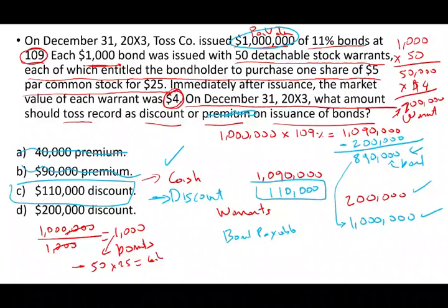On this question, they could also ask: how much did equity increase? Well, equity increased by $200,000 because warrants are part of stockholders' equity. They could ask what bonds payable should be — always debited and credited for the face amount or par value. To be comfortable with convertible bonds, you have to be comfortable with regular bonds. If you're not comfortable with regular bonds, this will be more challenging.